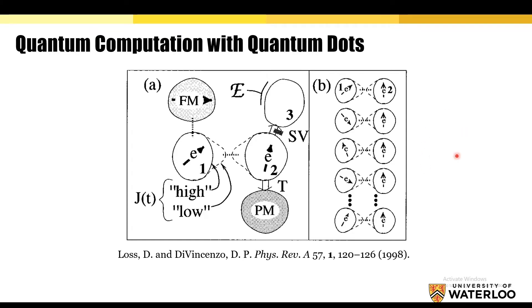Any quantum computer of this type, however, will need to be able to implement single qubit rotations, and in this case that corresponds to being able to flip the spin of the electron between up and down at will.